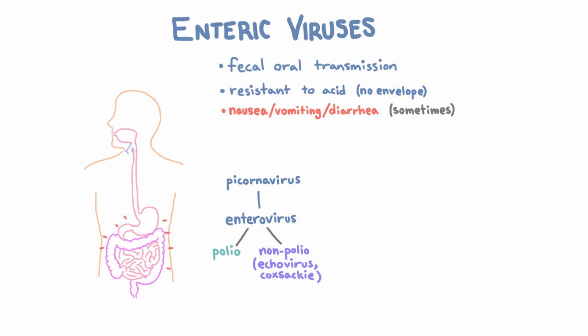Two other enteric viruses are not in the Enterovirus genus and not even in the picornavirus family: rotavirus and norovirus. They're not related to each other either, but they're both similar in that they're both what we call two-bucket diseases, which means they cause plenty of diarrhea and plenty of vomiting. Unlike enteroviruses, these enteric viruses really affect the GI tract in terms of their symptoms — they put you on the toilet and you don't know which way to turn.